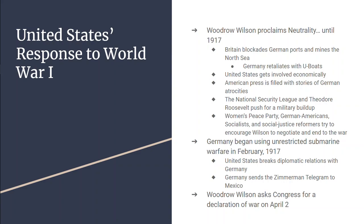As a result, Germany agrees to stop using submarine warfare, but they start using it again in February of 1917. When Germany begins using unrestricted submarine warfare again in February 1917, the United States breaks off diplomatic relations with Germany.